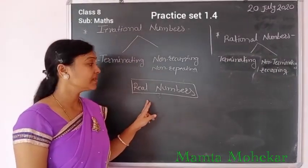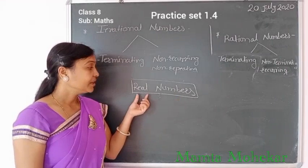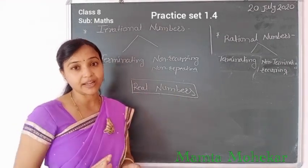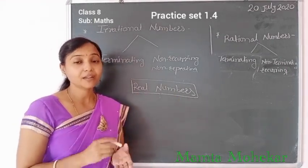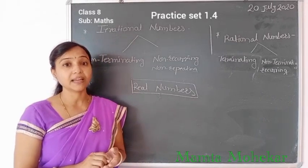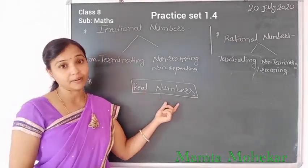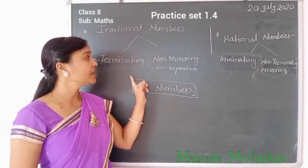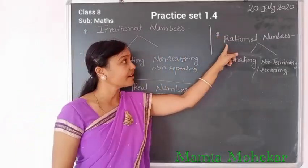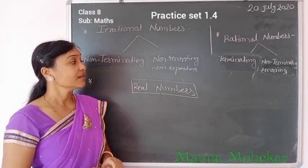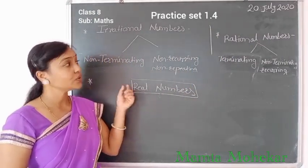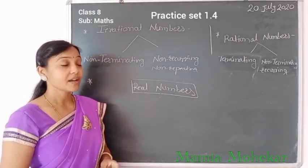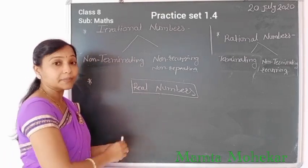The next type is real numbers. The definition of real numbers: the numbers which can be plotted on a number line — any number which can be plotted on a number line is called a real number. Another definition: the collection of irrational numbers and rational numbers together is called real numbers. Means all rational numbers and all irrational numbers are called real numbers.